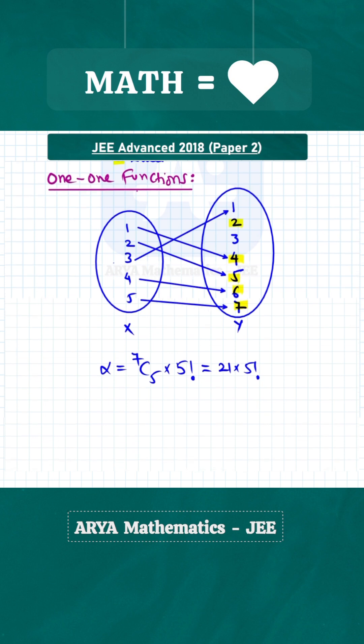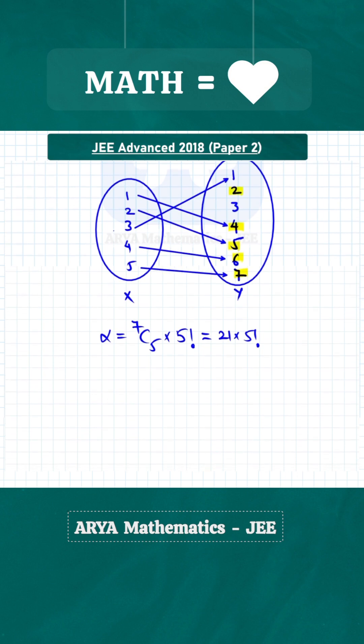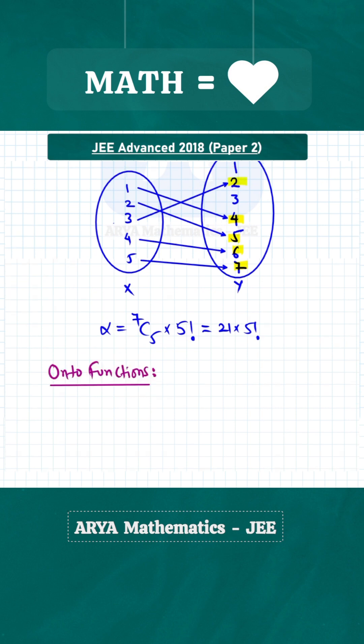Next we are going to find the number of onto functions. Remember onto functions are defined from set Y to X. The number of onto functions from Y to X is the number of ways of distributing 7 distinct objects among 5 persons such that each gets at least 1.